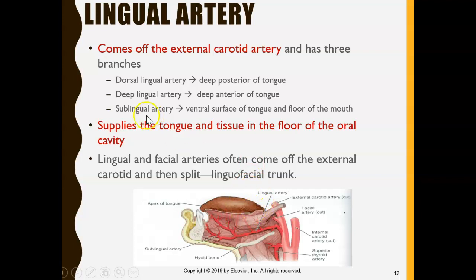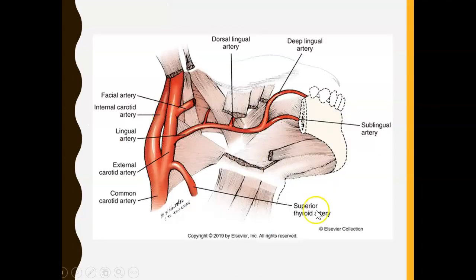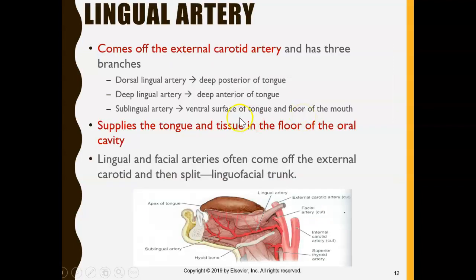The deep lingual artery supplies the deep anterior part of the tongue — the front of the tongue. Then we have the sublingual artery, which sends blood to the ventral surface, the bottom of the tongue, and also the floor of the mouth. If you lift up your tongue, you'll see the floor of the mouth, and the blood supply there comes from the sublingual artery.